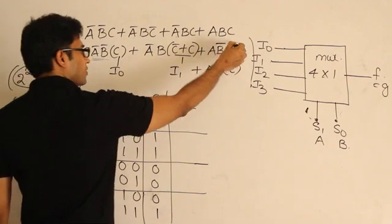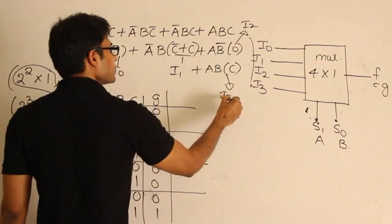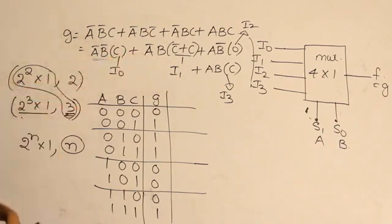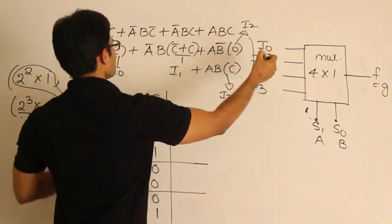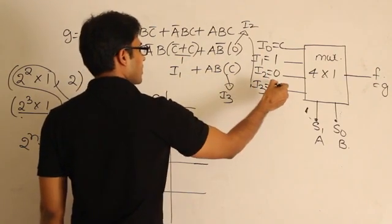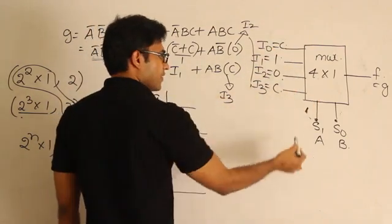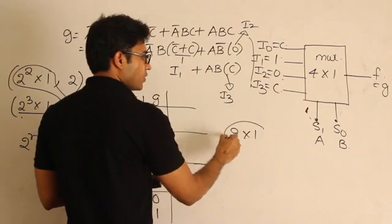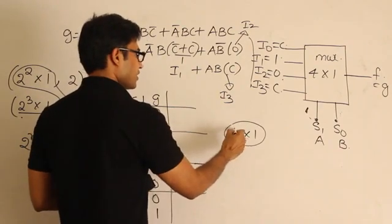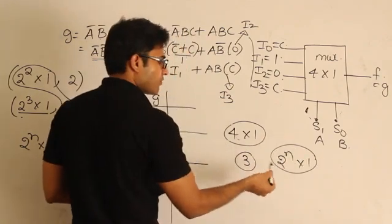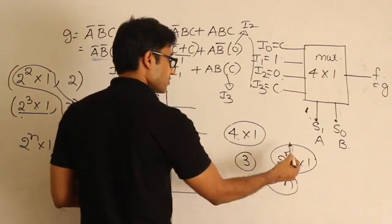For ab' (1,0): no term is present in the function, so i2 = 0. For ab (1,1): the term is abc, so i3 = c. Therefore, to implement g using a 4×1 multiplexer with a→s1, b→s0, set i0 = c, i1 = 1, i2 = 0, i3 = c. This shows that a 4×1 multiplexer can implement a 3-variable function.